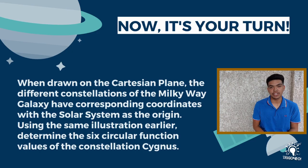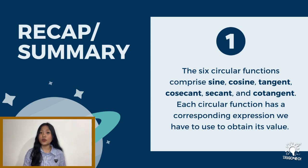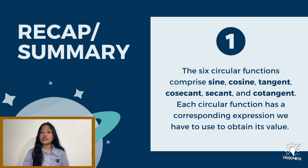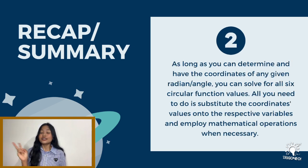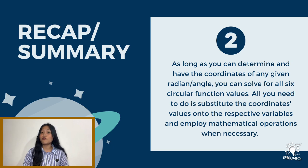And that's all from me. Let us go back to Shane to wrap up today's vlogtorial. Thanks, Christian. But before we end today's episode, here is a recap of the three essential lessons we have learned today. First, the six circular functions comprise sine, cosine, tangent, cosecant, secant, and cotangent. Each circular function has a corresponding expression we have to use to obtain its value. Second, as long as you can determine and have the coordinates of any given radian or angle, you can solve for all six circular function values. All you need to do is substitute the coordinates onto the respective variables and employ mathematical operations when necessary.